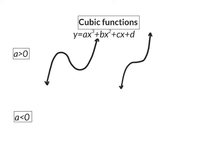When the a value is smaller than zero or negative and the graph has two stationary points it will look something like this, and if it has only one stationary point the form will be like this. Here it is important to realize that if a is negative you will always start top left and make your way down to the bottom right.